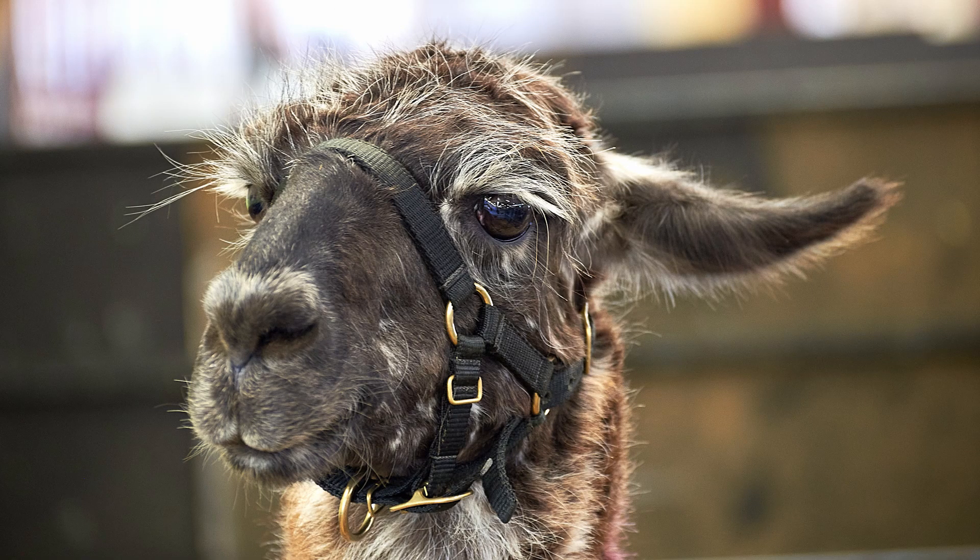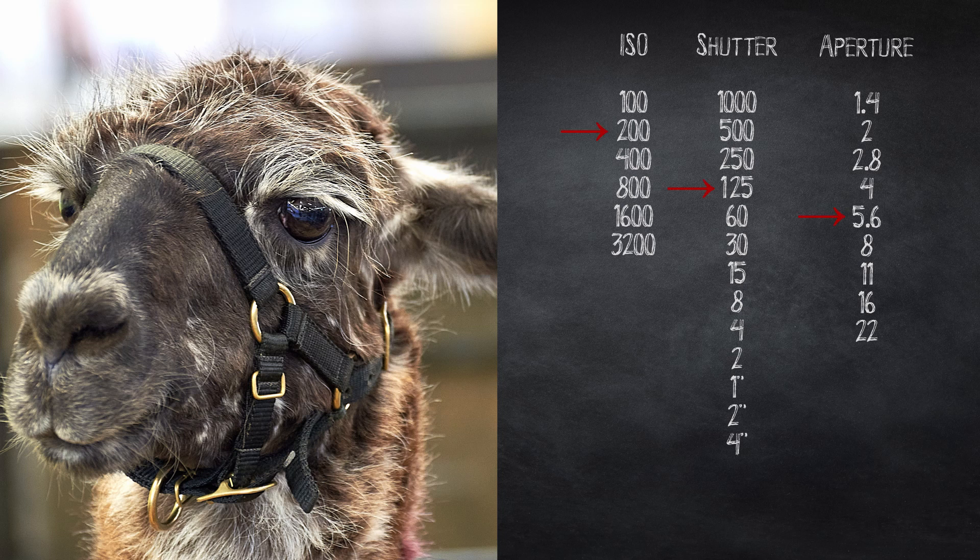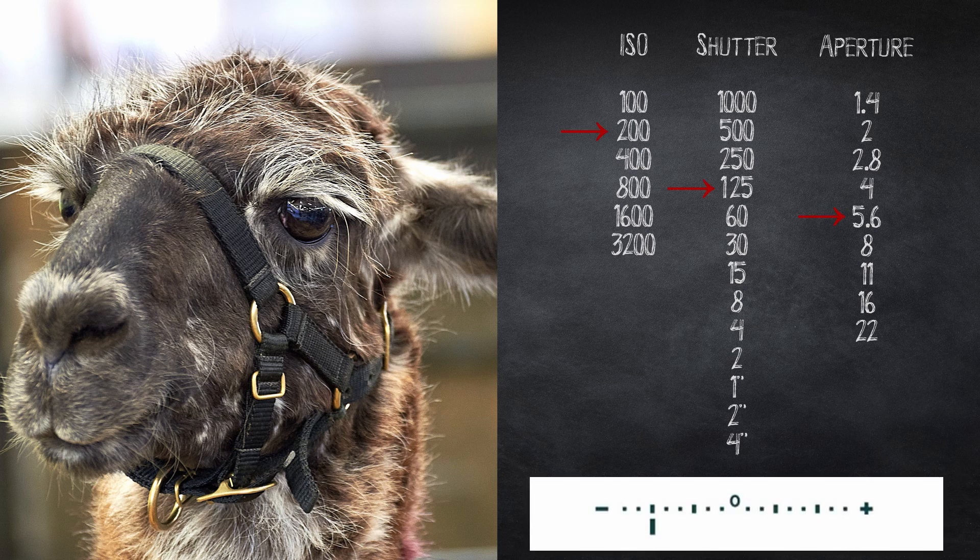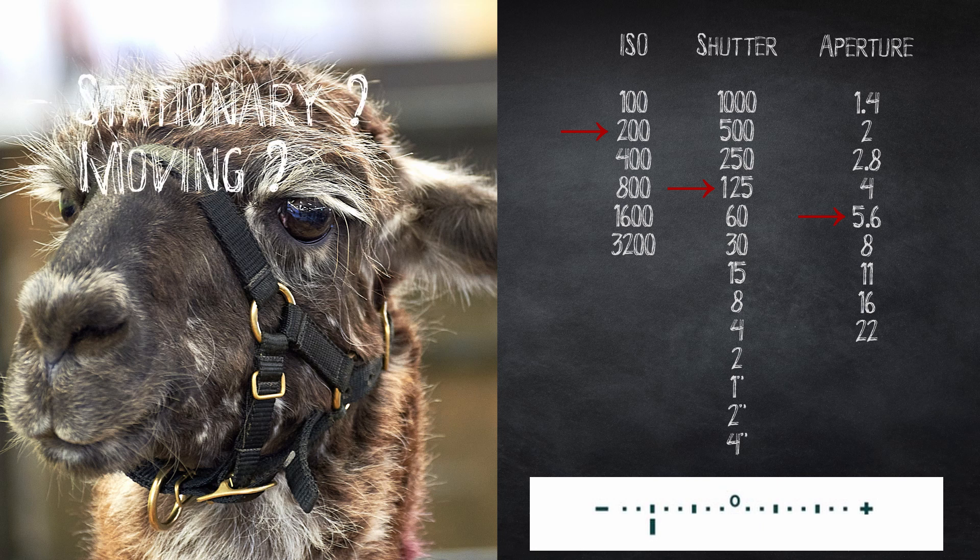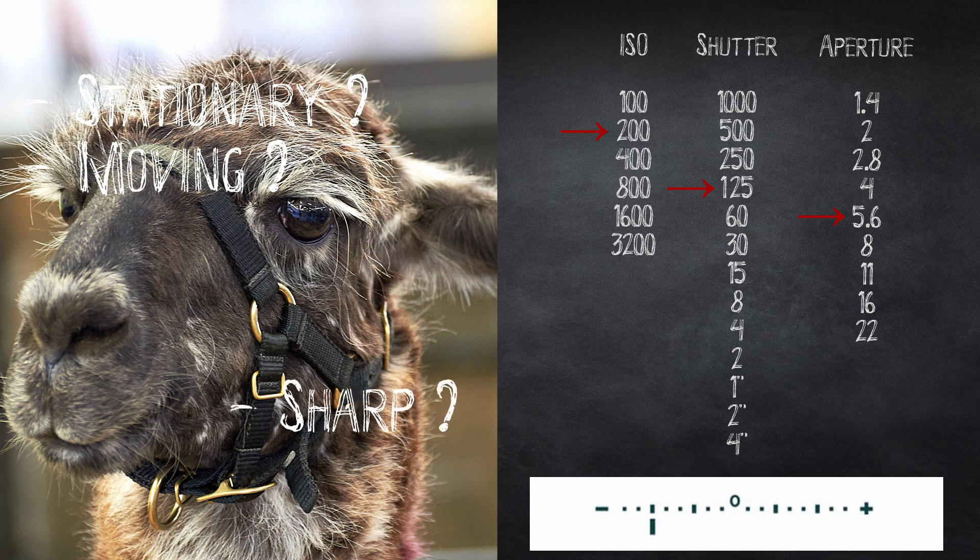In this next example we have a llama in a dark barn. Again turning on our camera, it just happens to be set like this and the camera meter shows two stops underexposed. So you ask yourself what is stationary, what is moving, what do you want sharp, what do you want blurry.